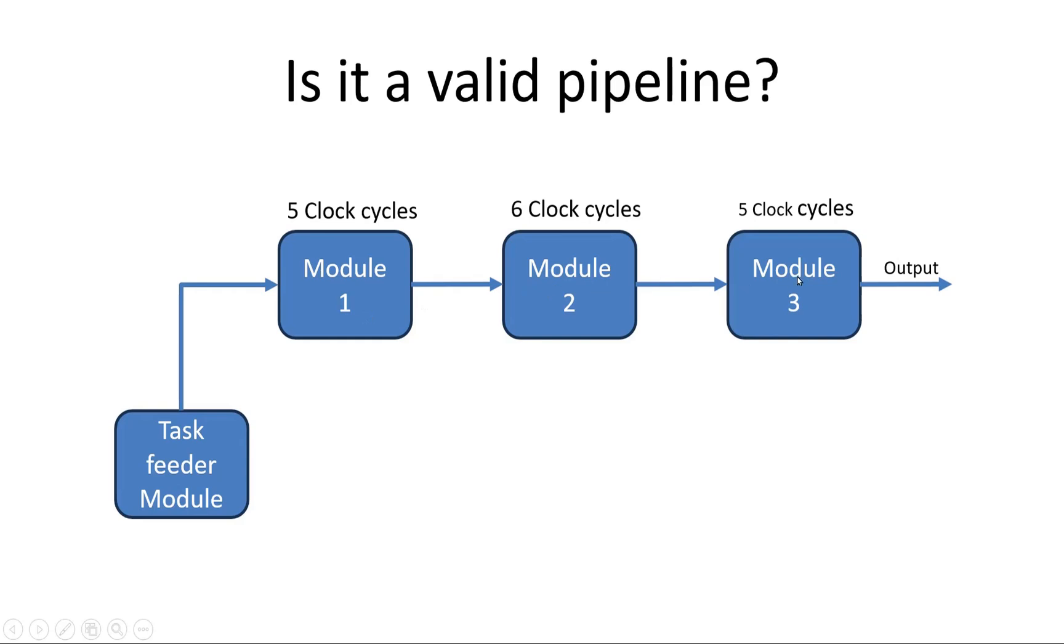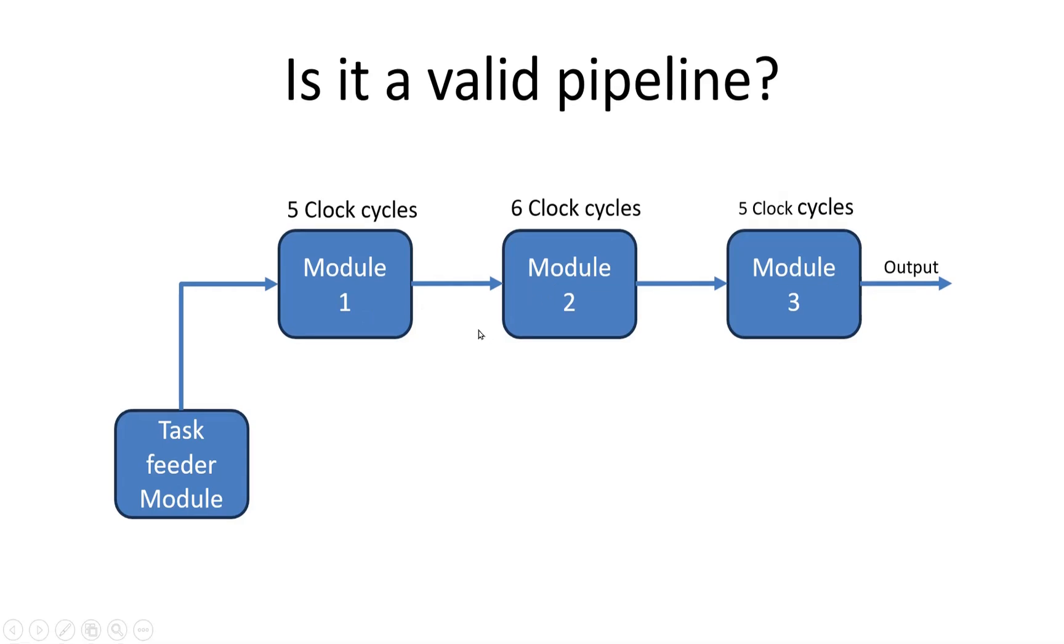But now the question arises: what if module 1, module 2, and module 3 do not have fixed delay in terms of clock cycles? Let's say module 1 for one type of task can take 3 clock cycles, and for another type of task it may take 5 clock cycles.